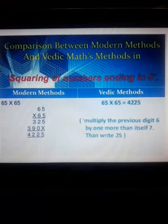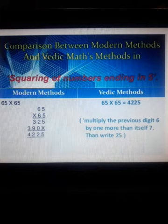First of all we'll do trick number one, squaring of a number ending with five. See this is modern method and one is Vedic method. Modern method you solve during your calculations, very long method. Vedic method will provide you answer in one line in just 5 to 10 seconds. What you have to do? What is the trick?